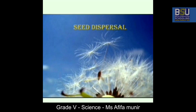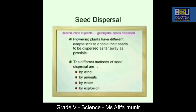Our today's topic is seed dispersal, which is very important for the reproduction of plants. Flowering plants have different adaptations to enable their seeds to be dispersed as far away as possible. You have studied fertilization and seen how seeds are produced, and now we look at the different methods by which seeds are distributed.